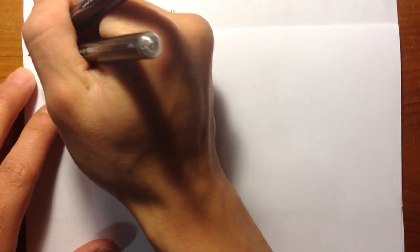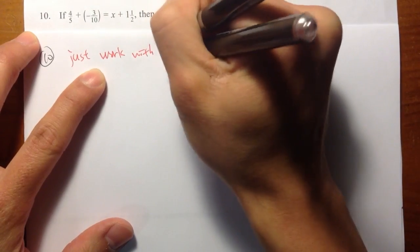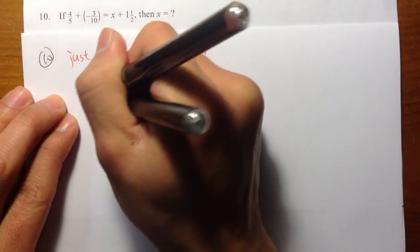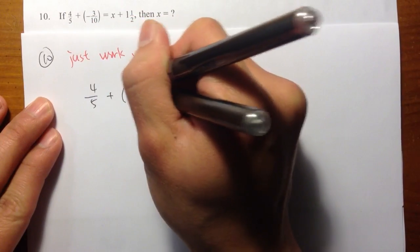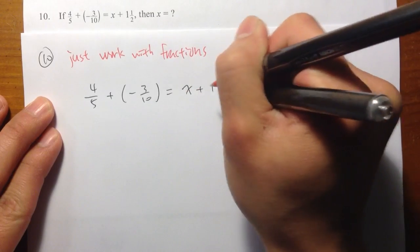So this is my second way. So let's say, just work with the fractions. So 4 over 5 plus parentheses negative 3 over 10 equals x plus 1 and 1 half.